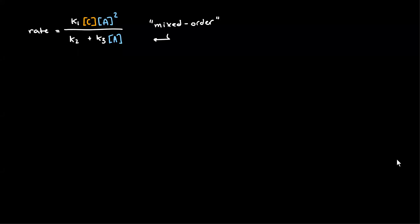A mixed-order reaction basically just means that the order of the reaction is going to change over time as the reaction progresses. This can be recognized through looking at an example equation such as this one. All you really need to be able to do is identify and understand why the order of the reaction is going to change over time. So at the beginning of the reaction,